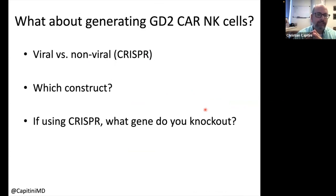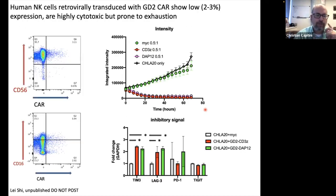The question now is: are T cells the right cells, or should we do this in NK cells? We know NK cells have activity against GD2-positive osteosarcoma. We can make GD2 CAR NK cells, but the efficiency is only about 3% of cells having the CAR. However, even though only 3% have the CAR, they kill really well — tumor growth in controls goes from 75,000 to 250,000, but with just 2-3% CAR-positive NK cells, the tumor is eliminated. When we look at exhaustion markers, some go up, some have no change.